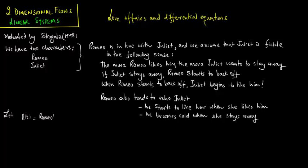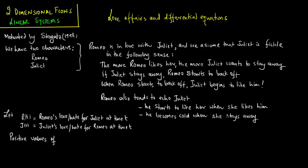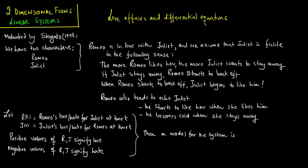Let r(t) be Romeo's love slash hate for Juliet at time t, and j(t) be Juliet's love slash hate for Romeo at time t. Positive values of r and j signify love and negative values signify hate. Then a model for the system is r dot equals aj and j dot equals minus br, where a and b are positive parameters.